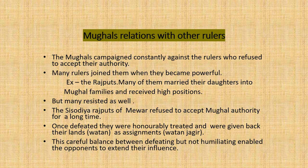The next topic is how was the relation of the Mughals with other rulers. The Mughals campaigned constantly against rulers who refused to accept their authority, but many rulers joined them when the Mughals became very powerful. One among them were the Rajputs — many of them married their daughters into Mughal families and received high positions. However, many still rebelled or resisted the Mughals. One example is the Sisodiyas, or Rajputs of Mewar, who refused to accept Mughal authority for a very long time.